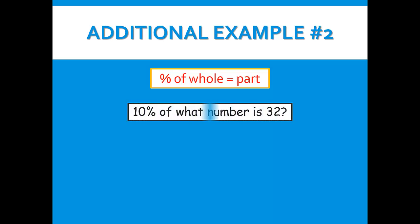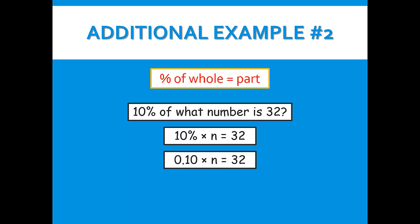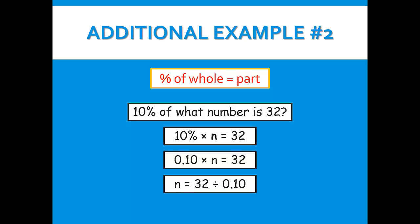For our second additional example we have 10% of what number is 32. That's going to be 10% times n equals 32. 10% as a decimal is 10 hundredths, so we have 0.10 times n equals 32. Now we will divide both sides by 0.10, so we get n equals 32 divided by 0.10. Now we can divide that.